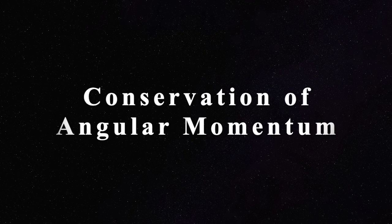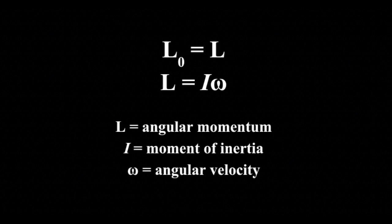To begin, let's discuss the conservation of angular momentum: the initial angular momentum is equal to the final angular momentum. Angular momentum is represented by a capital L, and it's the product of the moment of inertia and angular velocity. The moment of inertia is a tendency for an object to rotate or stop rotating — so the bigger the moment of inertia, the harder it is to start or stop something from spinning.